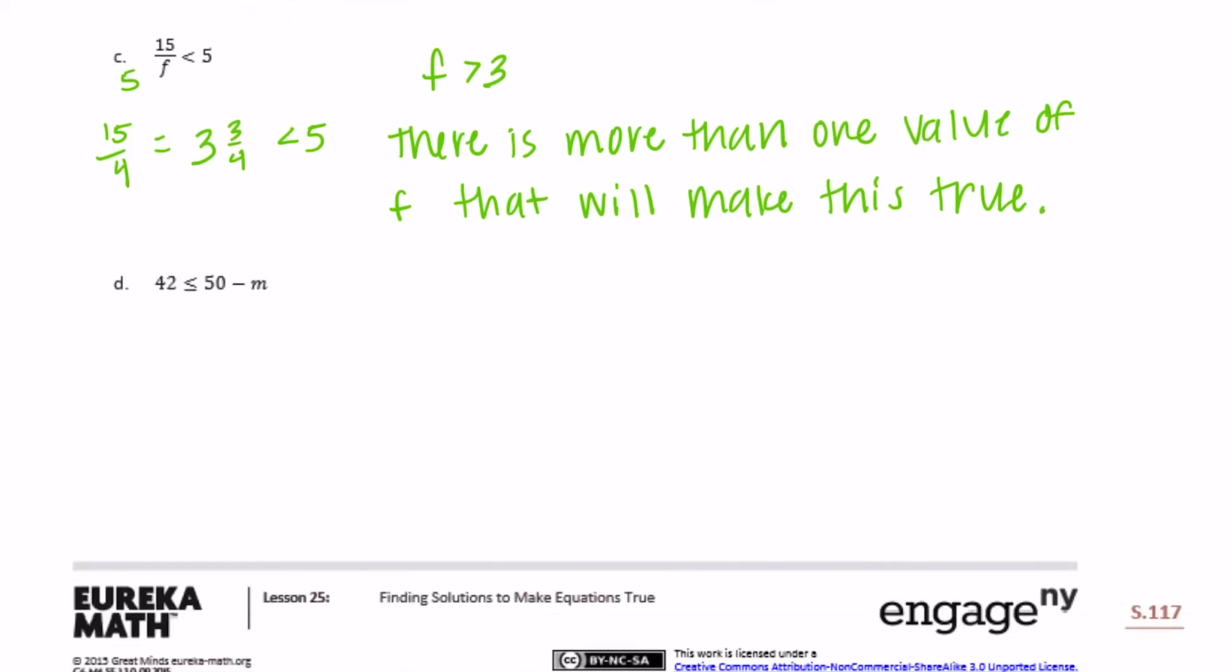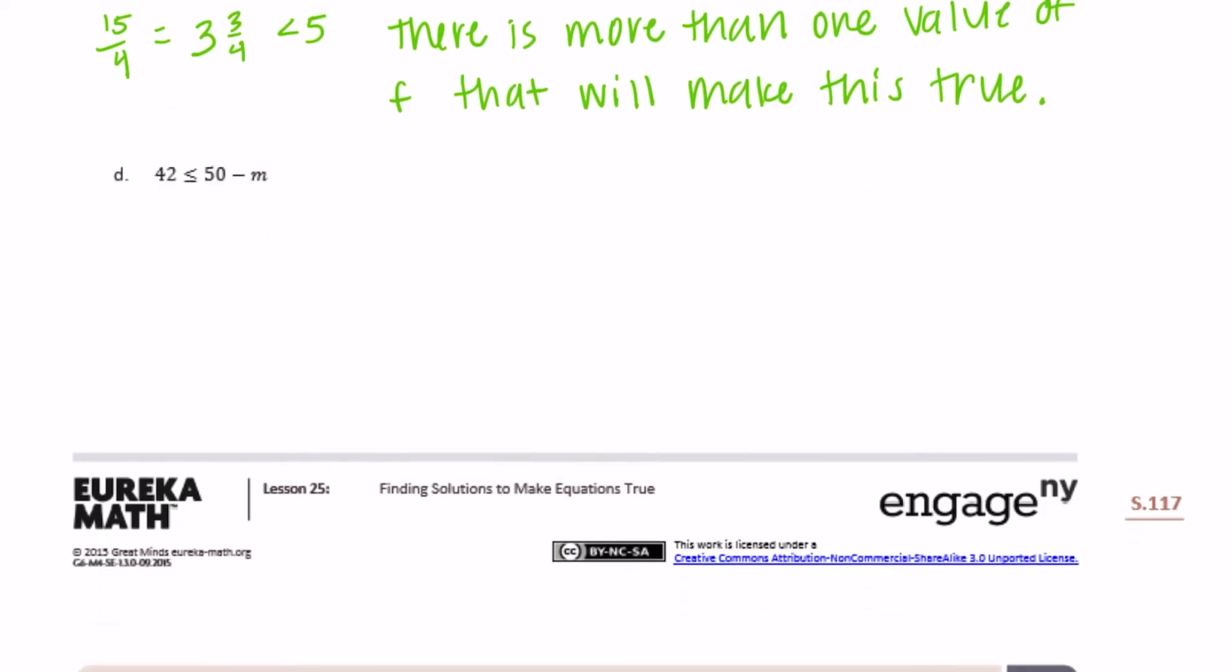Letter D. 42 is less than or equal to 50 minus M. So again, I'm going to make it equal. So 42 would be less than or equal to 50. Let's see, 50 minus 8 would make that equal.